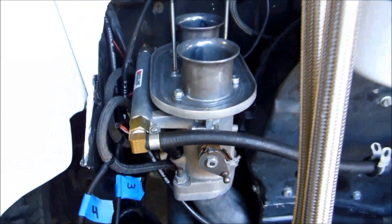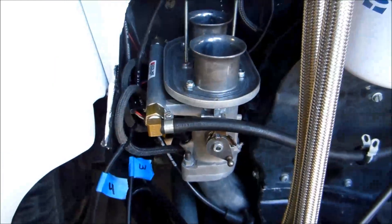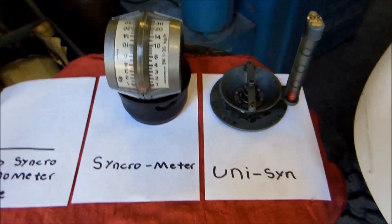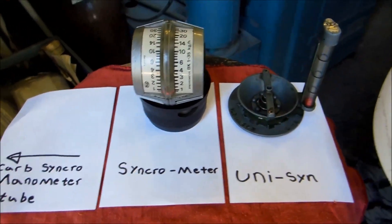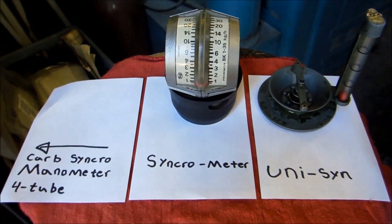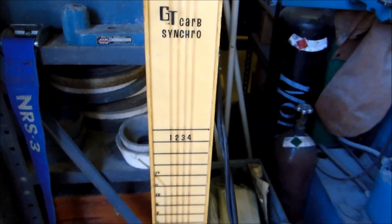I'm synchronizing my dual throttle bodies on my engine and I'm going to show you a couple tools I use for it. On the right is the classic unison, middle is a synchrometer which works a little better than the unison, and the ultimate in my opinion is the four tube manometer.